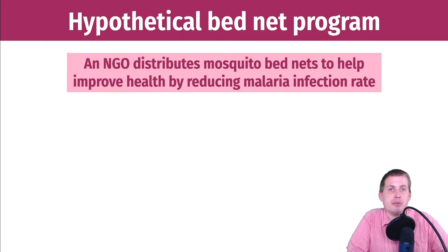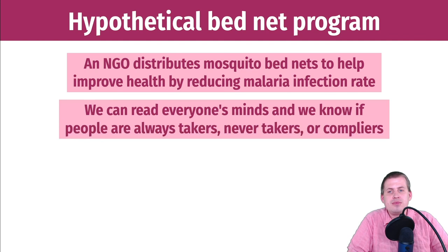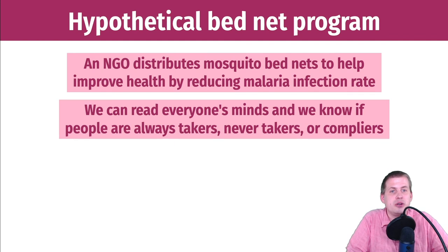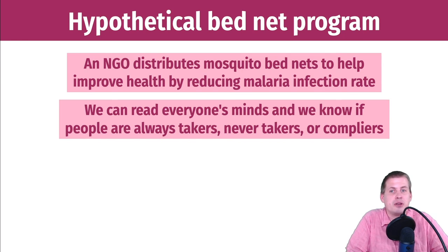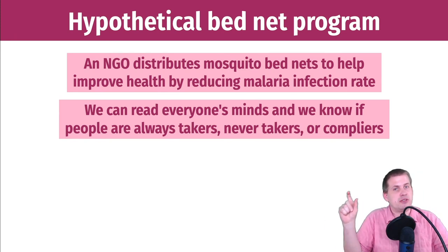To illustrate this, we'll use a hypothetical NGO program distributing mosquito bed nets with the goal of improving health and reducing malaria infection rates. To make it easier, we initially assume we can read everybody's minds and know if someone is an always taker, never taker, or complier. The fake dataset has a column indicating each person's compliance type, which helps us disentangle compliers from always takers and never takers.